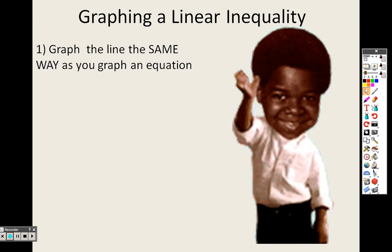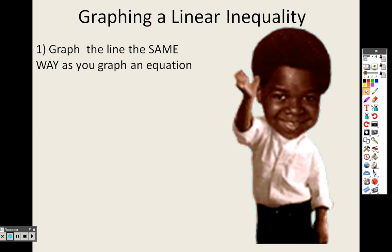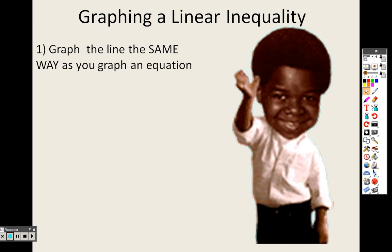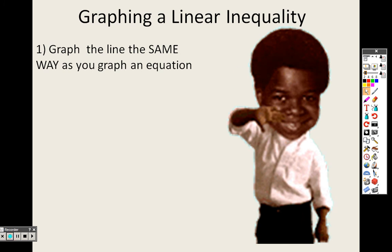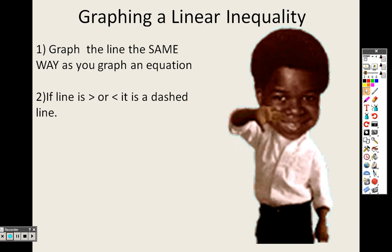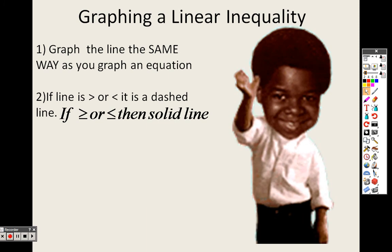For graphing a linear inequality, the first step is to graph the line the same way you graph an equation — the same quick graph method from 2.3. Find the Y-intercept, graph that point, then use the slope to go rise over run. Once you have those points, if the inequality is strictly less than or greater than, draw a dashed line. If it includes or equal to anywhere, draw a solid line.